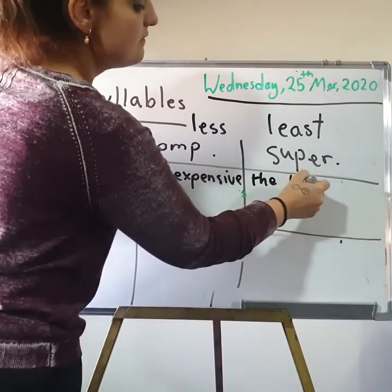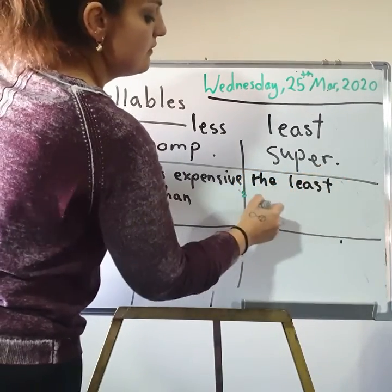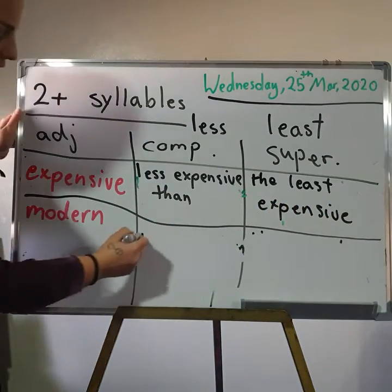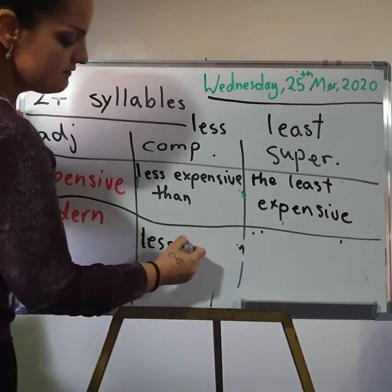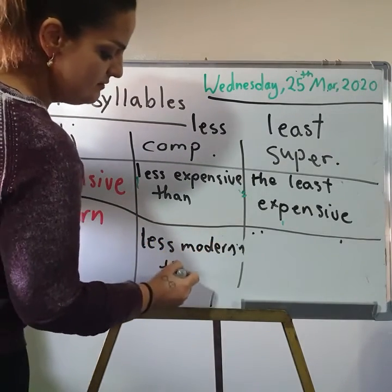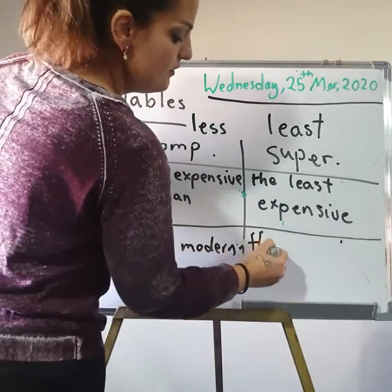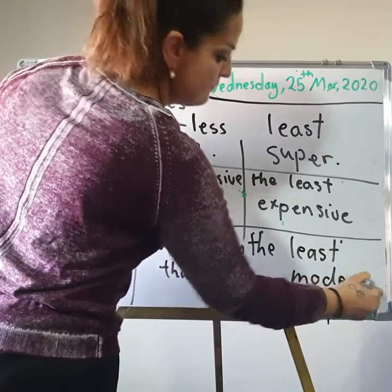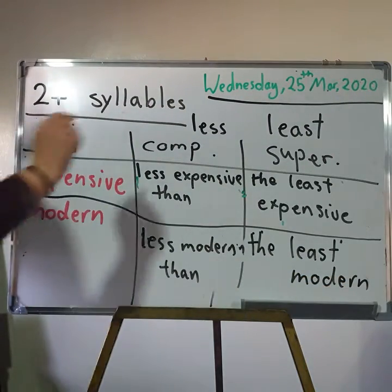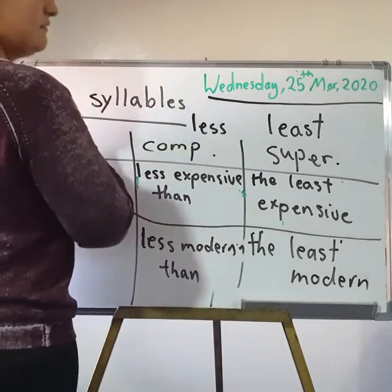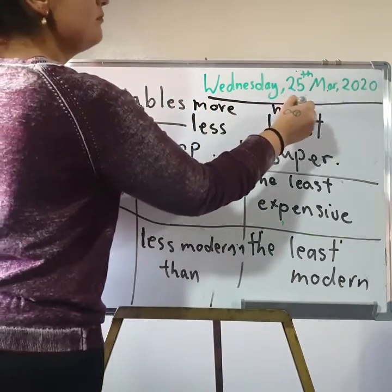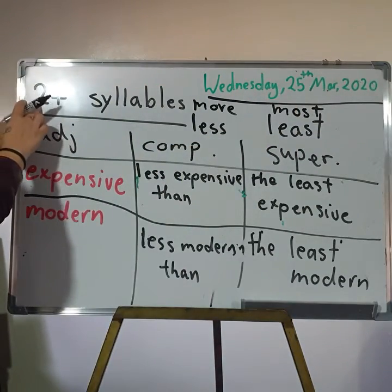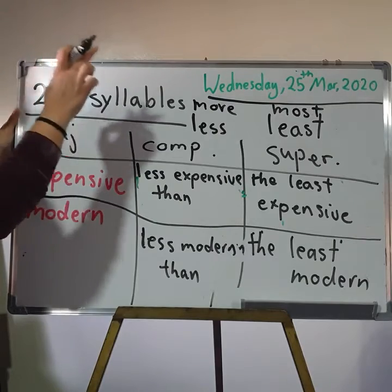Here, the least expensive, okay? Modern — I say less modern than, and here I say the least modern, okay? So, less and least — and I have more and most. These I use them with adjectives that have two syllables or more. Two syllables or more.